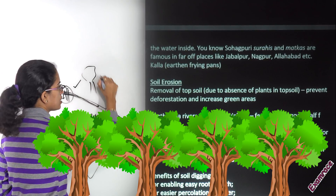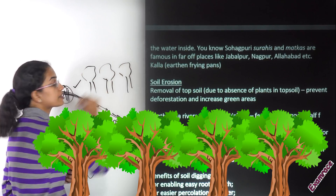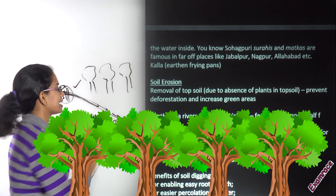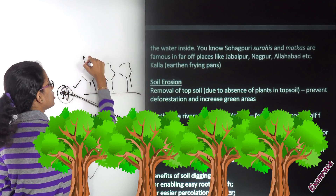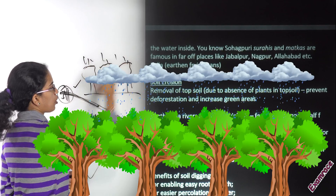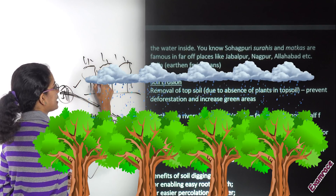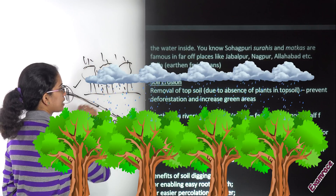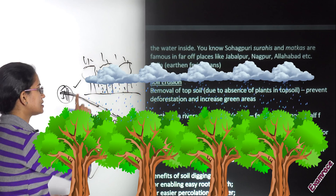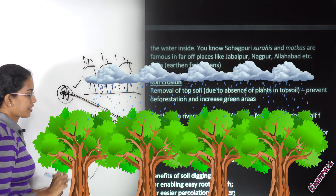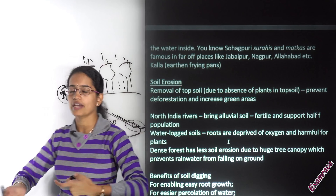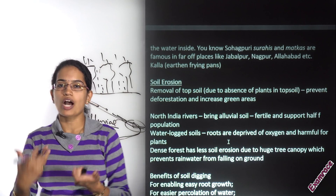If there is a very dense forest, the rate of soil erosion decreases because rainfall is absorbed mainly by the top canopy. As a result, very little water reaches the ground, and the rate of erosion automatically declines. This is very important to understand.